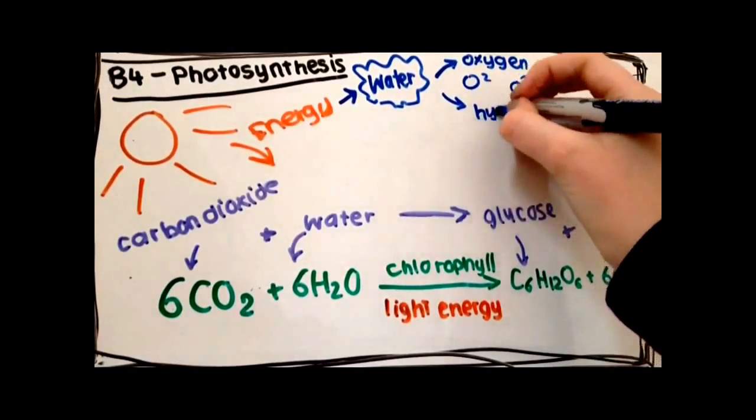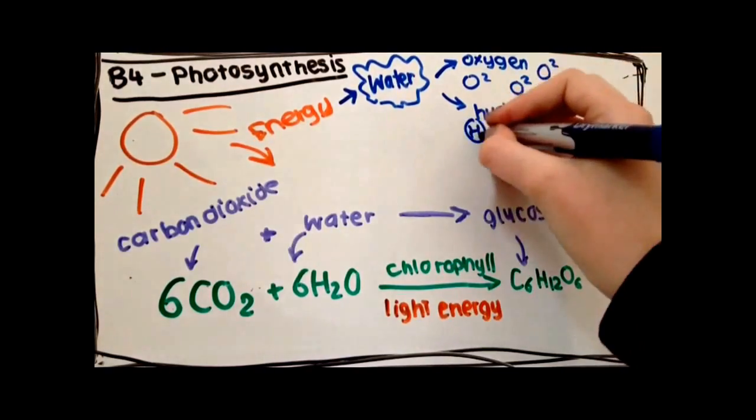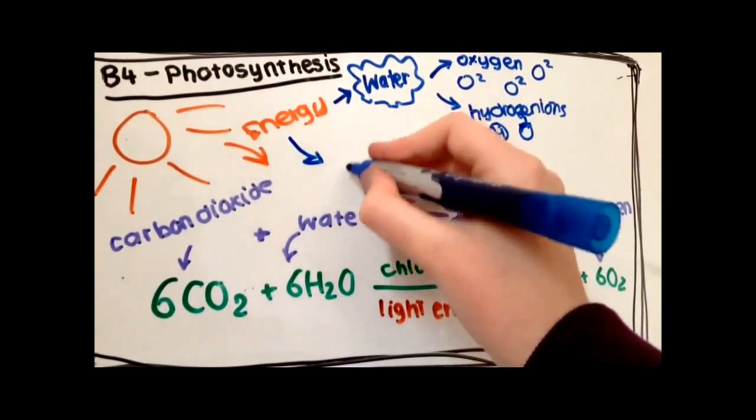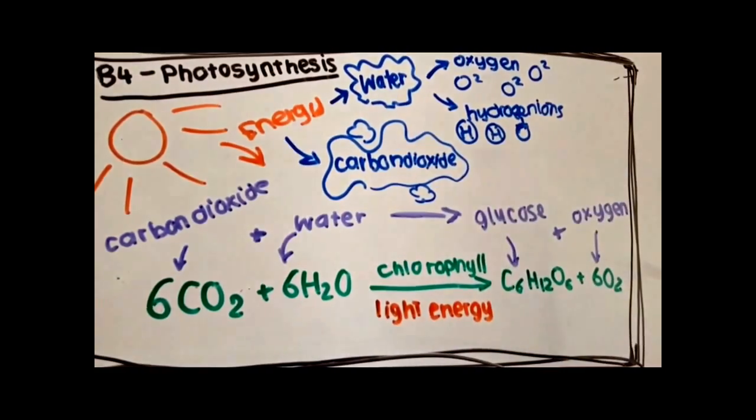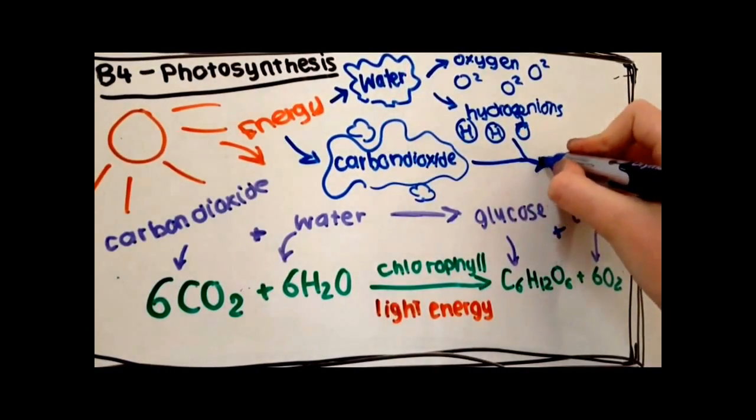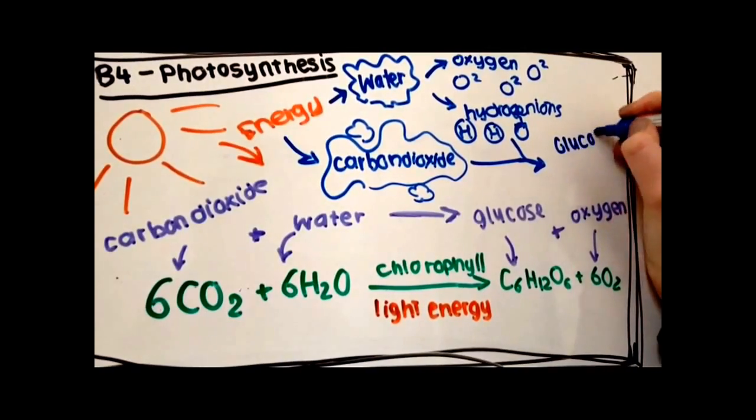What's really happening here is the light energy is splitting the water into hydrogen ions and oxygen gas. The carbon dioxide gas will then combine with the hydrogen ions and they will form glucose and water.